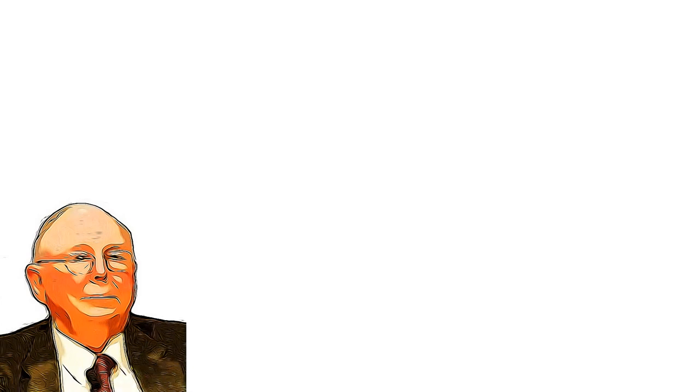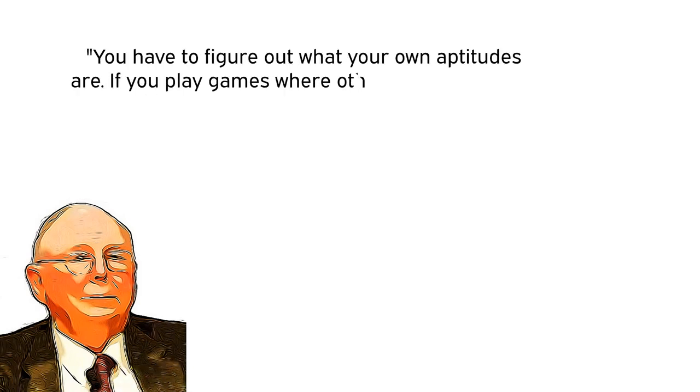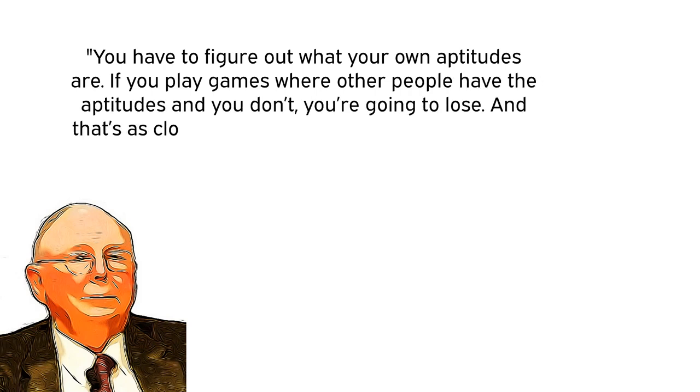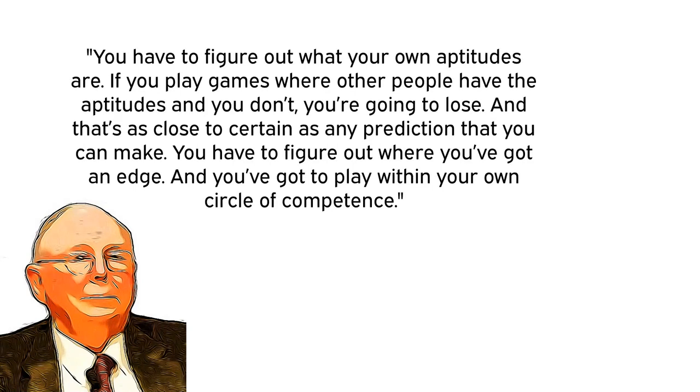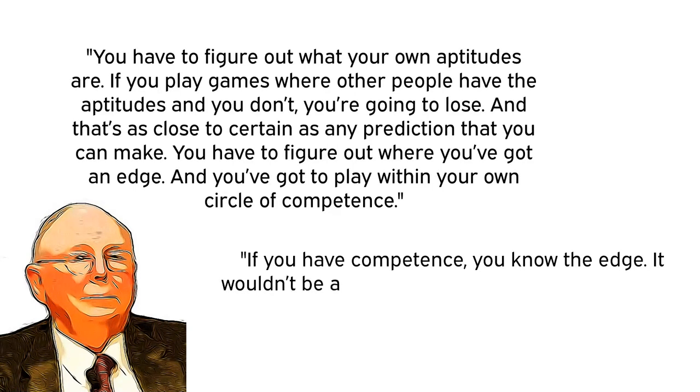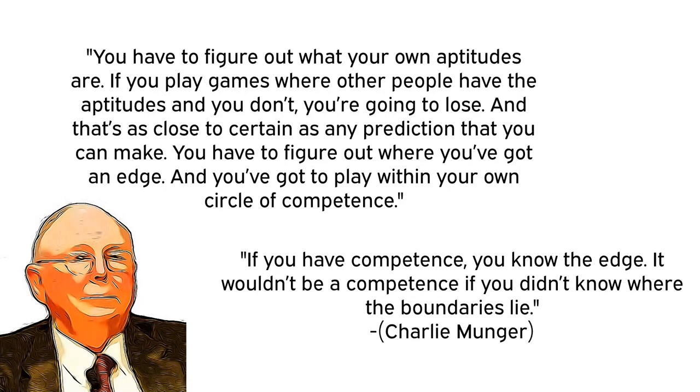Charlie Munger put it succinctly when he said: You have to figure out what your own aptitudes are. If you play games where other people have the aptitudes and you don't, you're going to lose. And that's as close to certain as any prediction that you can make. You have to figure out where you've got an edge, and you've got to play within your own circle of competence. If you have competence, you know the edge. It wouldn't be a competence if you didn't know where the boundaries lie.